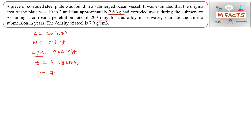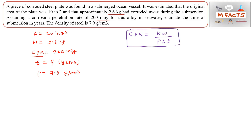Let's apply the formula: CPR = kW / (ρ × A × t). Whenever doing this type of question, first consider the unit of CPR — it is the turning point. Here CPR is given in mils per year, so k = 534 and area must be in inches squared.